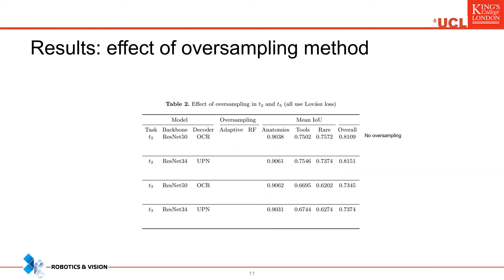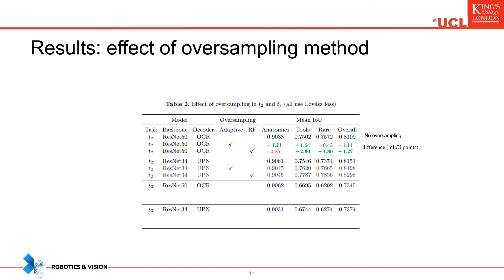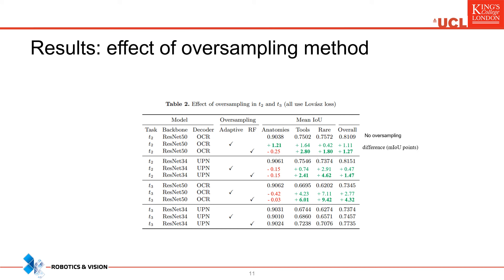We find that the overall gain in performance when using either of our sampling methods is a result of significant improvements over the tool and rare classes. This finding is consistent for both OCRNet and HRNet in task 2. The gains for both methods are even more evident on task 3, which presents maximum class granularity and thus imbalance, and our method effectively addresses this challenge.